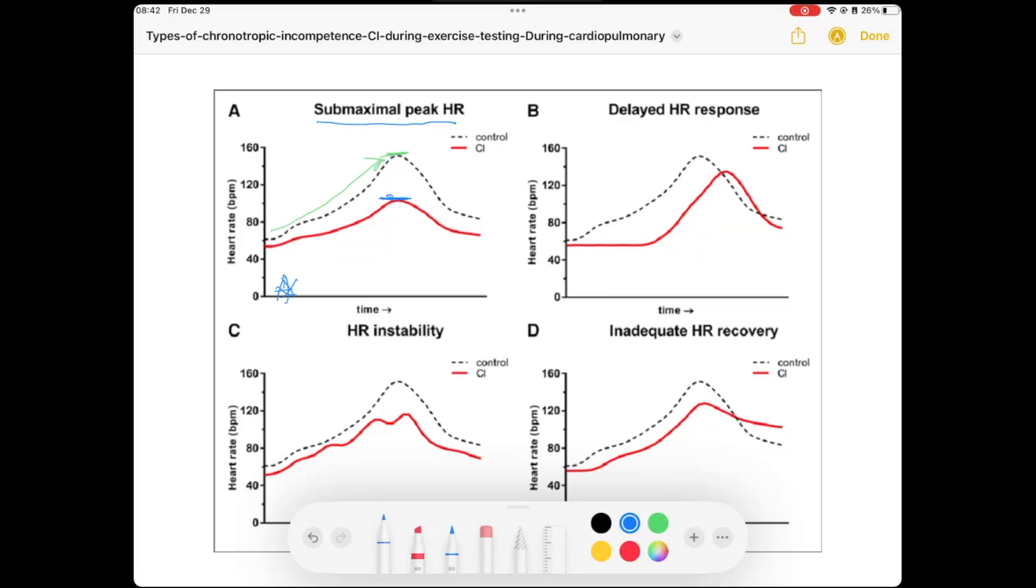All of these chronotropic incompetence diagnoses are from various reasons: autonomic dysreflexia, demyelinating disease, it could be all sorts of things.